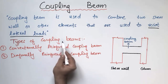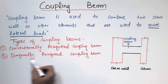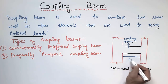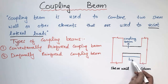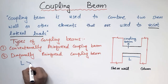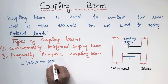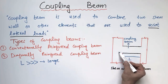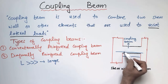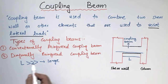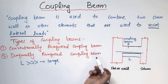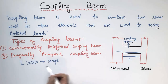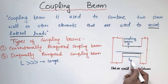What is the difference between these two types? Consider the length L of the coupling beam — the distance between the shear wall and the column. When the length of the beam is really large, we design it like a conventional reinforced beam, simply placing reinforcement at the bottom of the beam and providing stirrups all along its length. The design is essentially like a regular reinforced concrete beam. This is called the conventionally reinforced coupling beam.